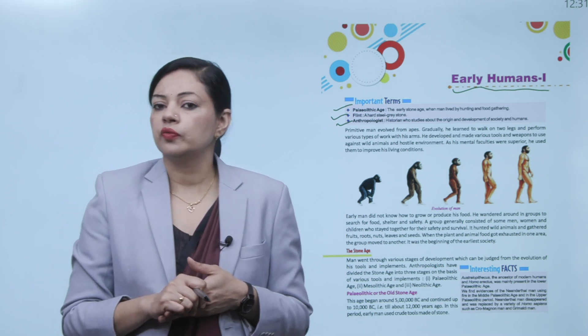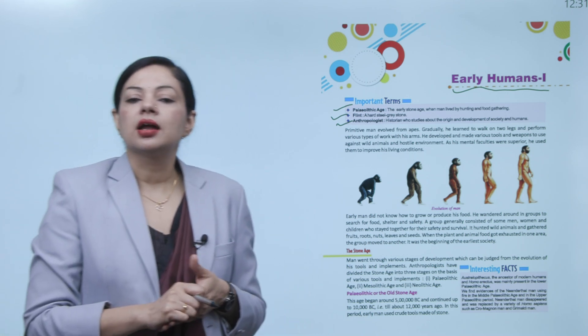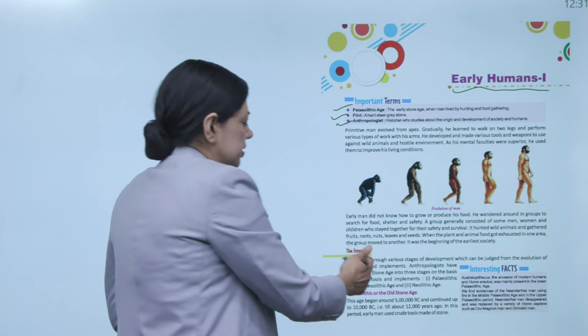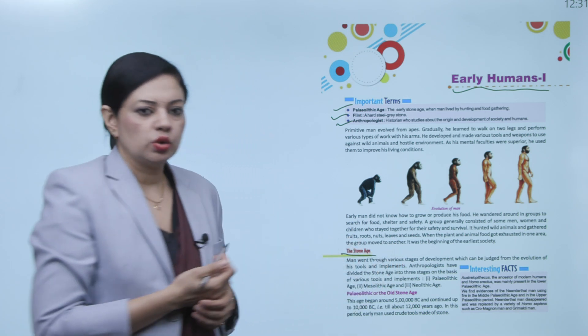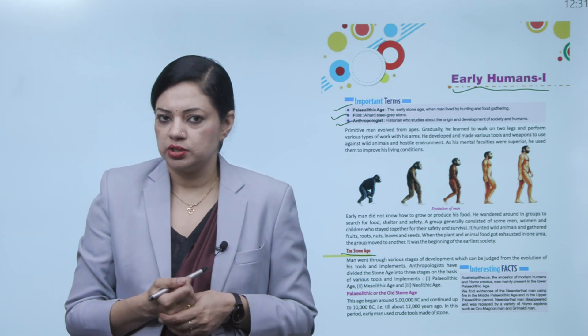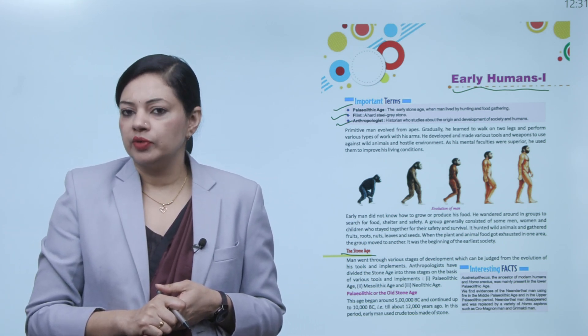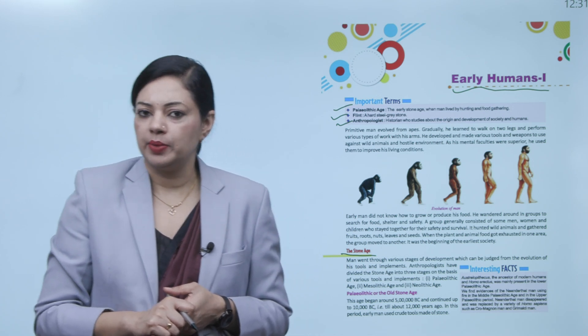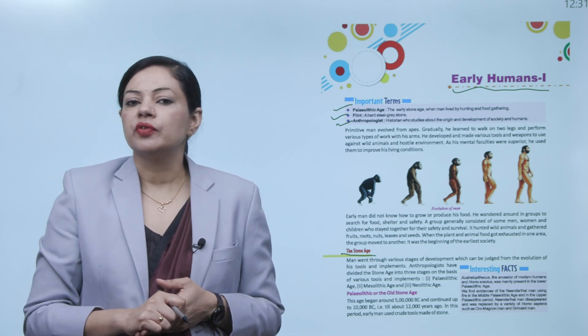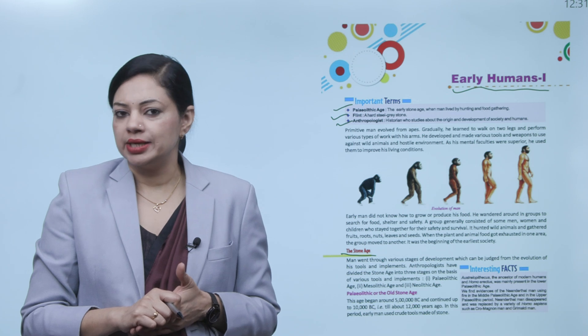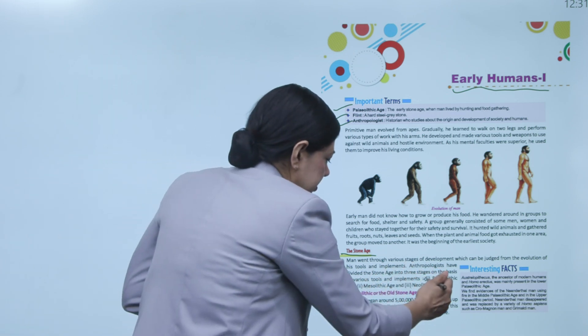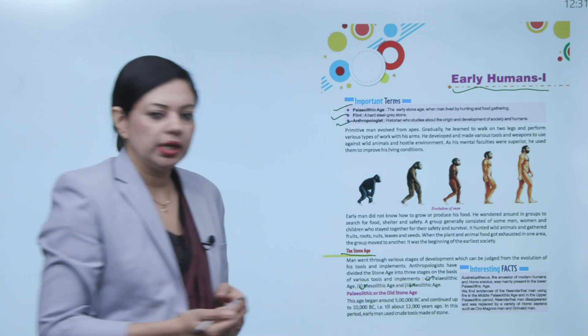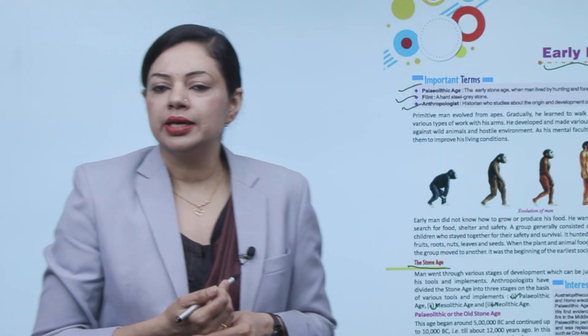It was the beginning of the earliest society. This is how the earliest society began. First we will read about the Stone Age. Stone Age man went through various stages of development which can be judged from the evolution of his tools and implements. Anthropologists have divided the Stone Age into three ages.